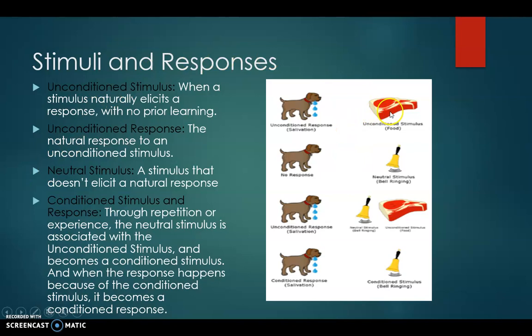Neutral stimulus, a stimulus that doesn't elicit a natural response. So in this case, the neutral stimulus is a bell because a ring to the dog does not elicit any response. They don't really care about it.